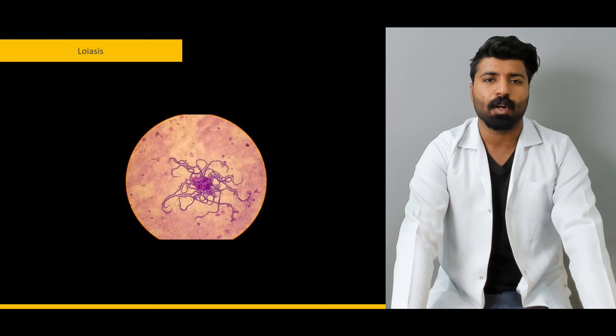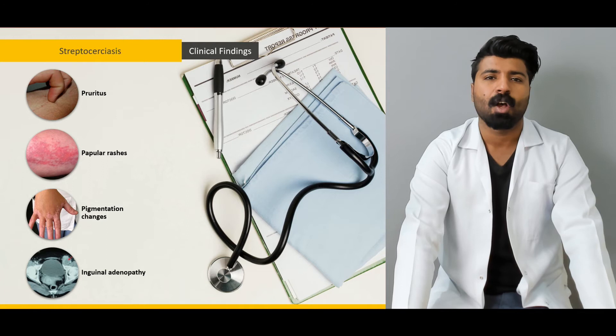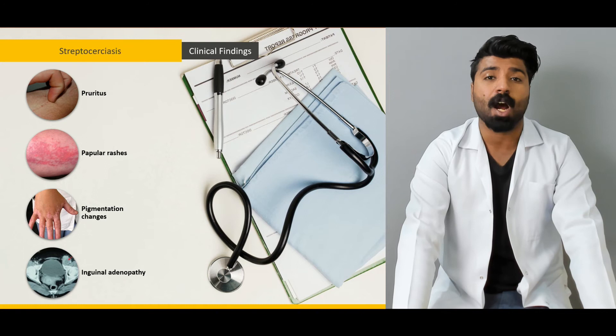Next, we're going to talk about Streptocerciasis — what it is caused by, what those worms are called, their life cycle, how they lead to clinical manifestations and clinical findings, what their target organs are in the body involving the skin and lymph systems, and how we diagnose and treat them.